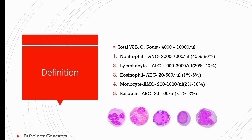Increase in WBC count is called leukocytosis. First we should know the normal reference range for leukocyte count in adults. WBC count is normal when it is 4,000 to 10,000 per microliter.